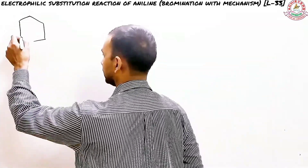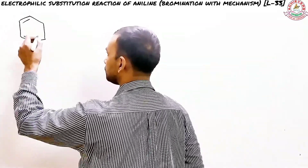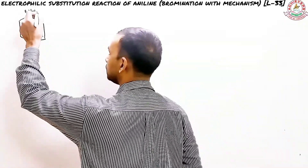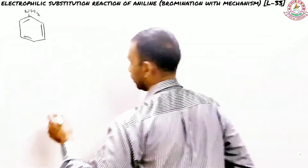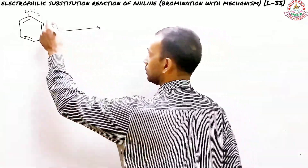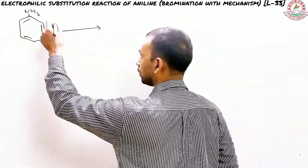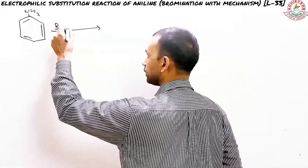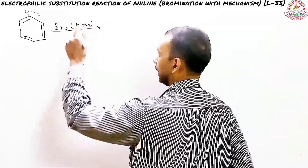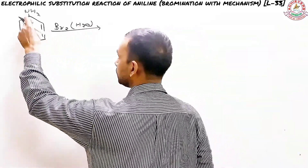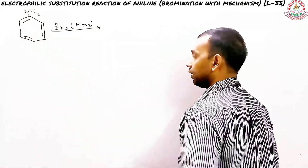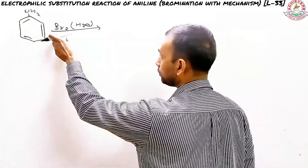Here is the structure of aniline — benzene connected to NH2 is called aniline. What we are doing here is taking bromine water and reacting it with the amine group, which is the aniline you probably know.